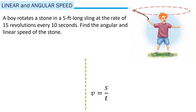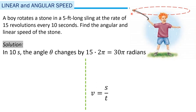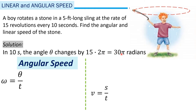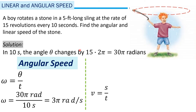Next example: A boy rotates a stone in a five-foot-long sling at the rate of 15 revolutions every 10 seconds. We need to find both the angular and the linear speed. In 10 seconds, the angle theta changes by 15 times 2 pi — since we have 15 revolutions and each revolution is 2 pi — giving 30 pi radians.